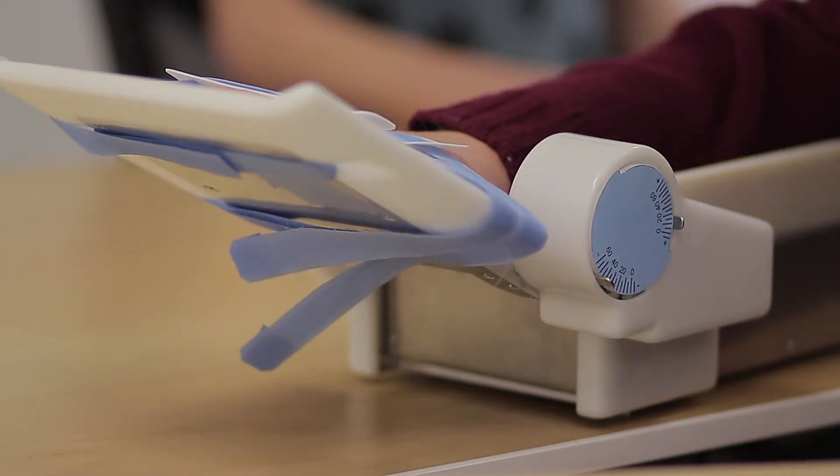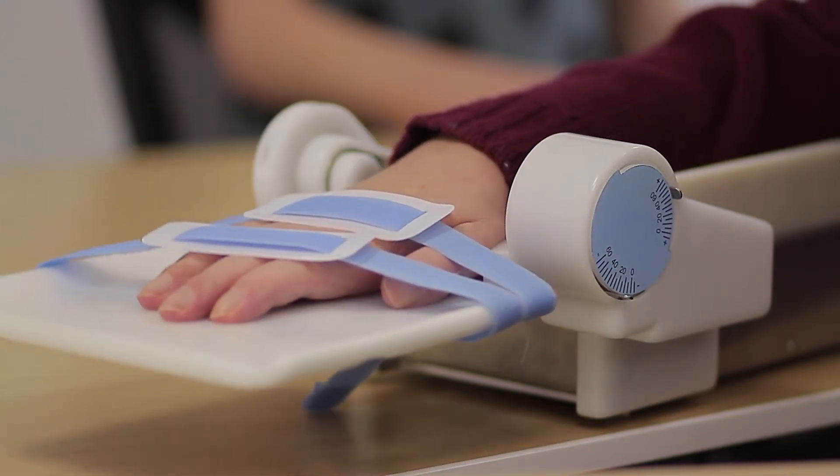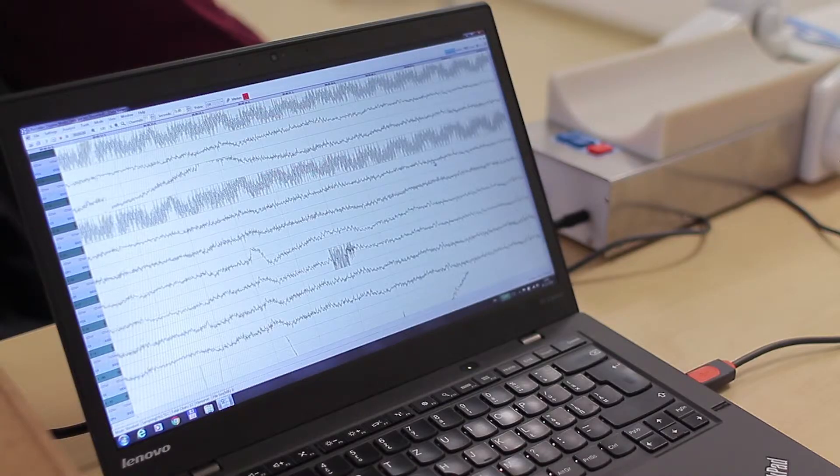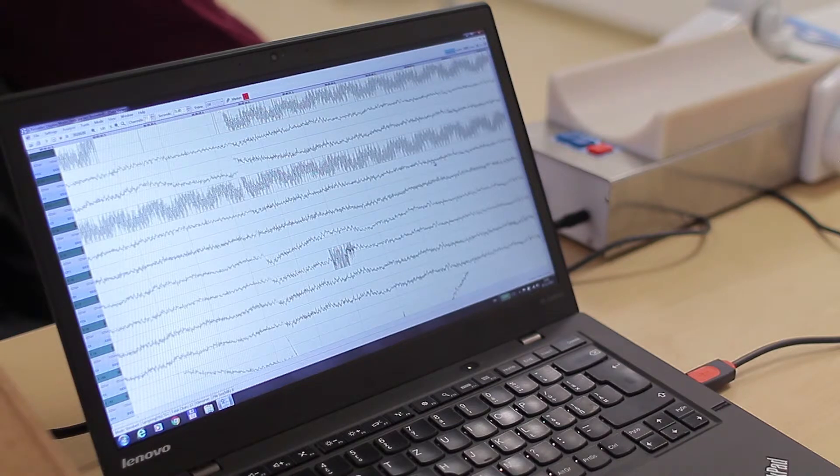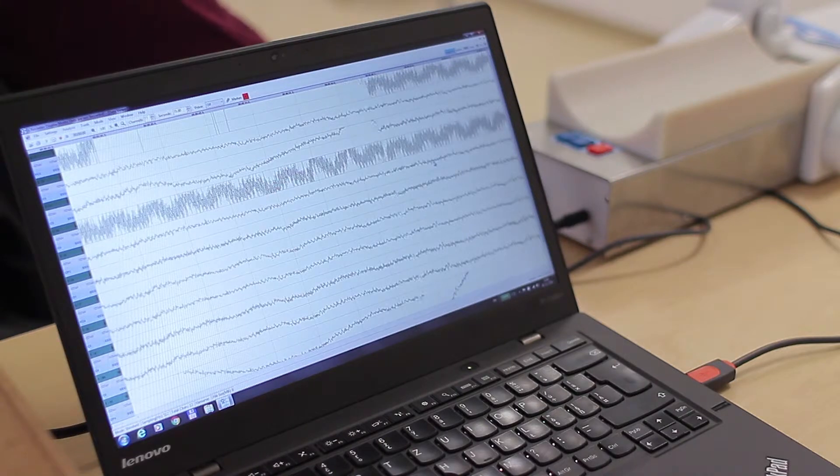The system works on a principle of the brain-computer interface. The principle consists in an analysis of the measured electrical brain activity, electroencephalogram, during the mental imagination of the predefined movement, in our case moving the wrist upward.